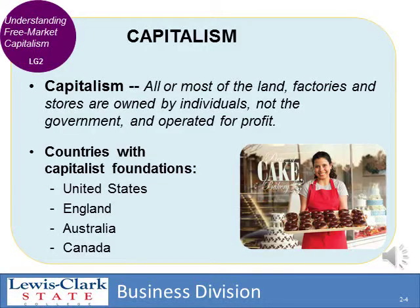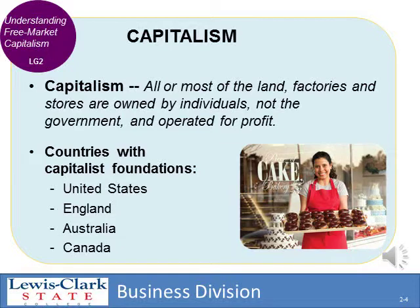When you read and study the chapter, you'll be introduced to a few names: Malthus, Keynes, and Adam Smith. They're important and may show up on a quiz. Adam Smith was known as the father of economics and he explained the concept of capitalism. Capitalism is where all or most of the land, the businesses, and the factories are owned by individuals, not the government. And the key here, as we discussed in chapter one, is that those businesses are operated for a profit.